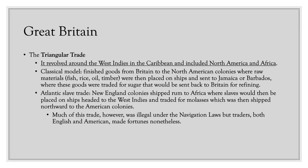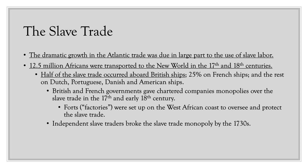Much of this trade was illegal under the Navigation Laws, but traders — both English and American — made fortunes nonetheless, as the laws could only be enforced to a certain extent in faraway North American colonies. The slave trade continued to be a major factor in the world economy, with dramatic growth in the Atlantic slave trade as agriculture and sugar plantations in the colonies expanded. 12.5 million Africans were transported to the New World in the 17th and 18th centuries: half the slave trade occurred aboard British ships, about 25% on French ships, and the rest on Dutch, Portuguese, Danish, and American ships.